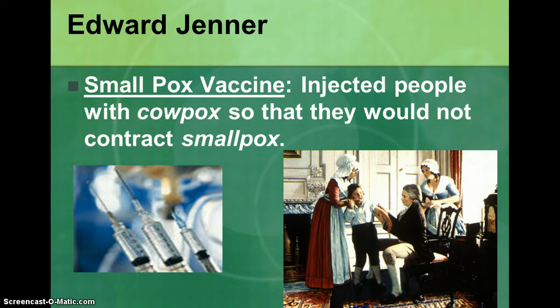Edward Jenner created a smallpox vaccine. At the time, smallpox was a major problem. He injected people with cowpox so that they would not contract smallpox. This vaccine helped people advance in science, and we know today that vaccines are very important.